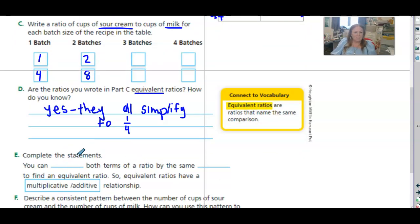So you can blank both terms of a ratio by the same blank to find an equivalent ratio. So you can multiply both terms of a ratio by the same number, right? What we do to the numerator, we do to the denominator. So these have a multiplicative relationship.